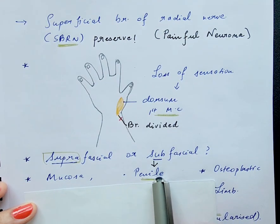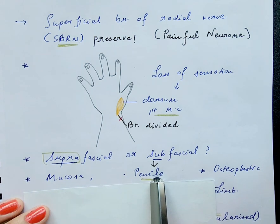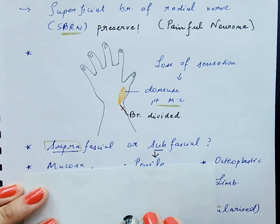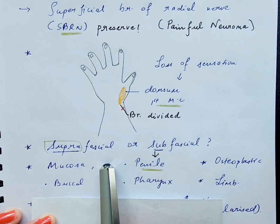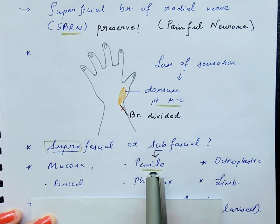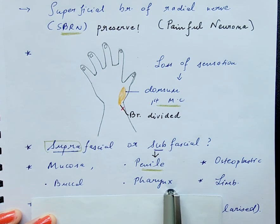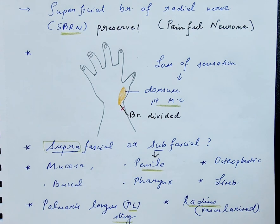Another condition in which subfascial harvest is required is for phalloplasty — that is, penile reconstruction — because it adds more bulk to the flap. The radial artery forearm flap is most commonly used for reconstruction in oral cancer cases such as the buccal mucosa, for phalloplasty in penile reconstruction, for reconstruction of the pharynx, for osteoplastic reconstruction, and in limbs as well.